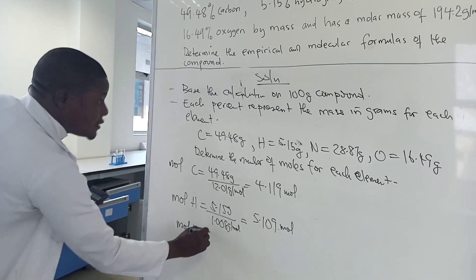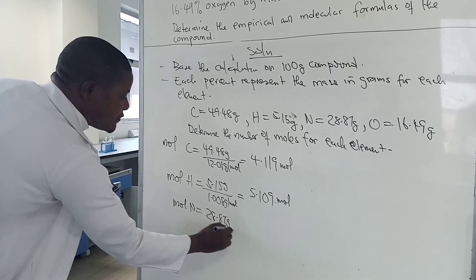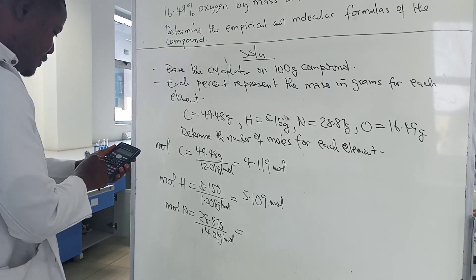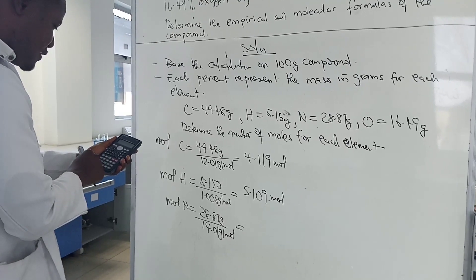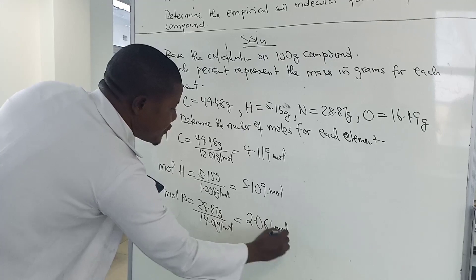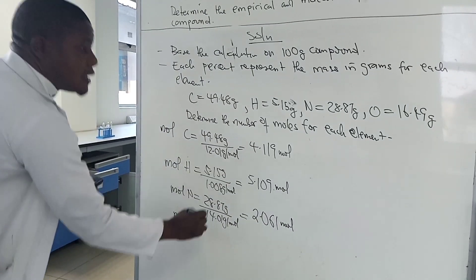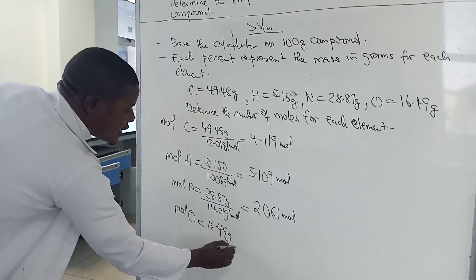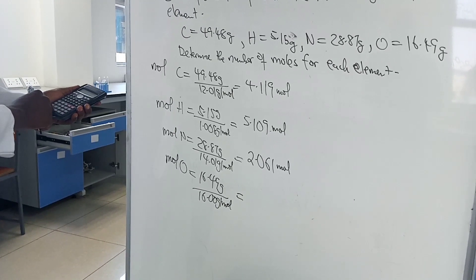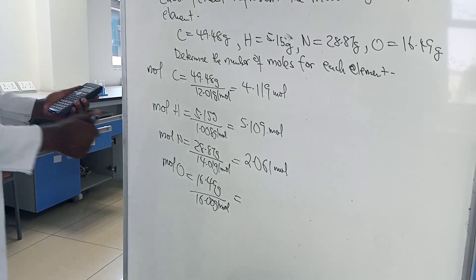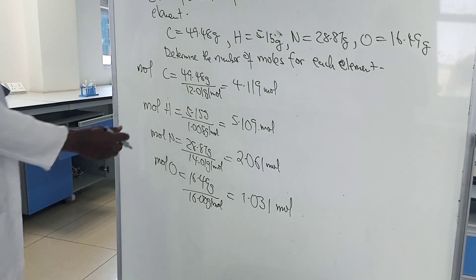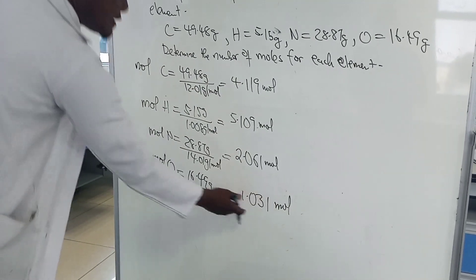For nitrogen: 28.87 grams divided by 14.01 grams per mole gives us 2.061 moles. For oxygen: 16.49 grams divided by 16.00 grams per mole gives us 1.031 moles. Then we divide by the smallest number of moles.